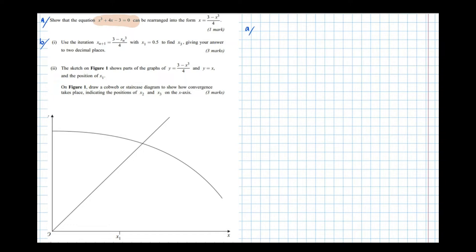So we've got 4x equals 3 minus x cubed, taking the 3 and the x cubed over to the other side, which implies that x equals 3 minus x cubed over 4 as requested.